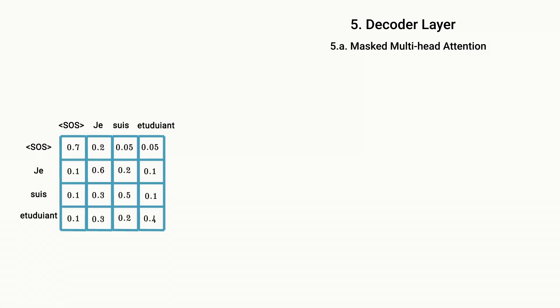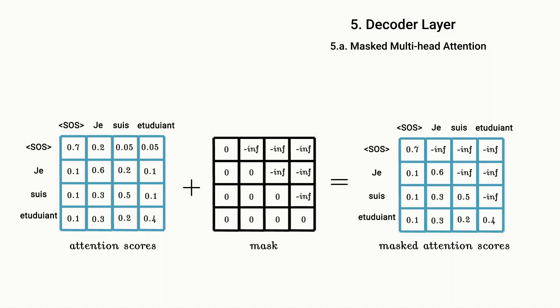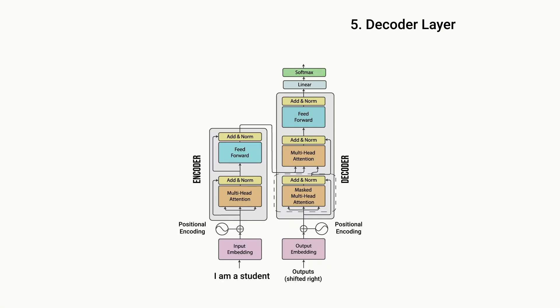To achieve this, the attention scores are masked by adding a matrix of zeros and infinities to the scaled scores before softmax is applied. And so this masking helps to disable all the elements above the diagonal of the attention score matrix. And this is the only difference between the encoder and the decoder multi-head self-attention layers. All other steps—concatenation, linear transformation, residual connection, and layer normalization—remain the same.